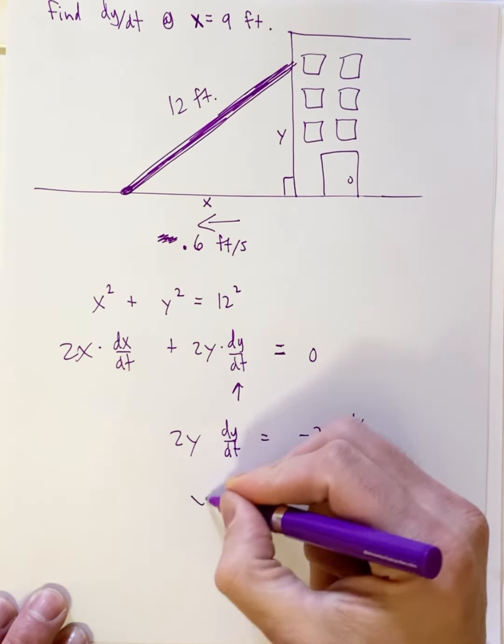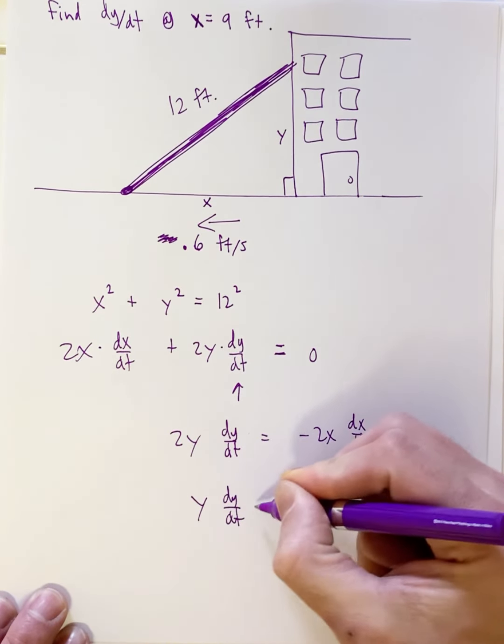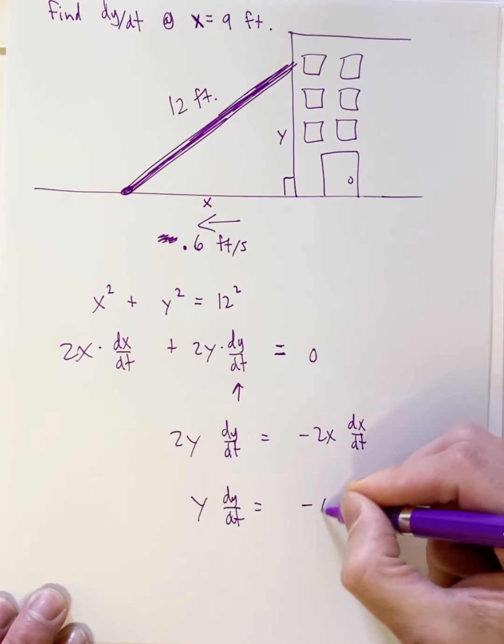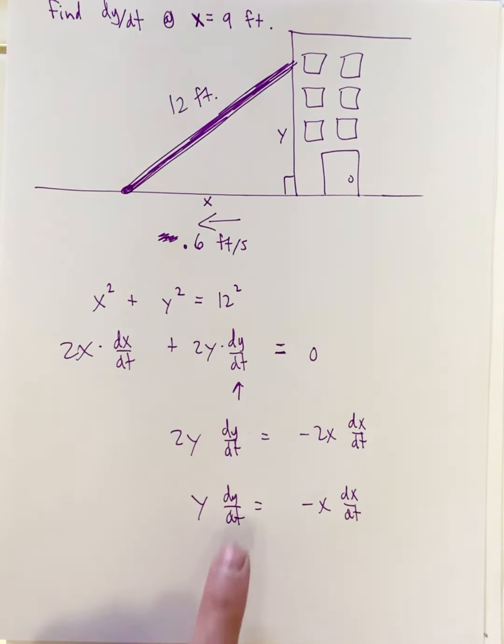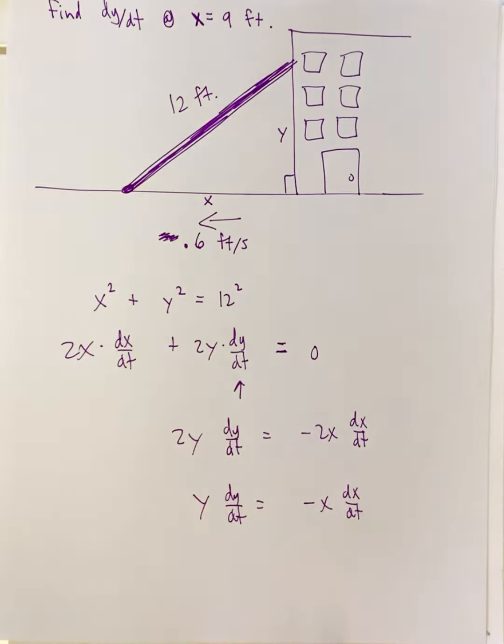Let me divide by 2. So y dy/dt equals negative x dx/dt. So I want to get y dy/dt alone. That's the goal.